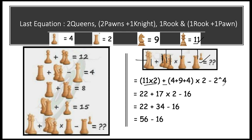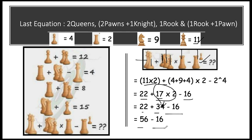We solve using BODMAS — Brackets, Orders, Division, Multiplication, Addition, Subtraction. Opening brackets: 11 × 2 = 22; 4 + 9 + 4 = 17; 2^4 = 16. Then multiplication: 17 × 2 = 34. Finally: 22 + 34 − 16 = 56 − 16 = 40. The final answer is 40!